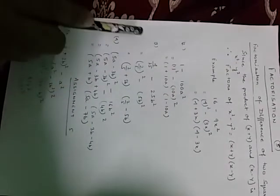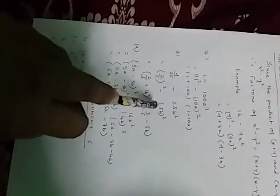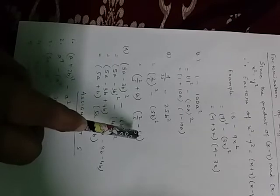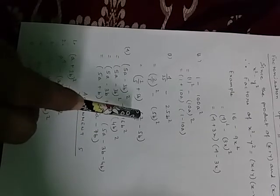Similarly, 4 by 25 minus 25b square is 2 by 5 square minus 5b square. So 2 by 5 plus 5b and 2 by 5 minus 5b. Children, you have to understand that we have to convert it into a square.